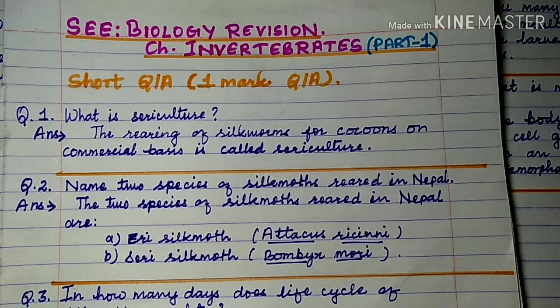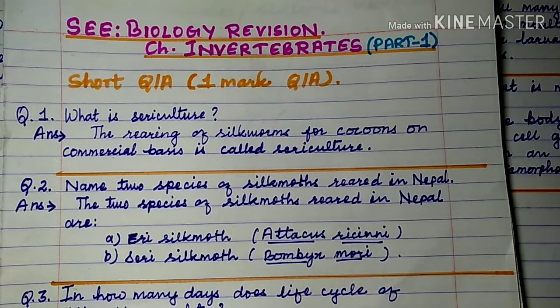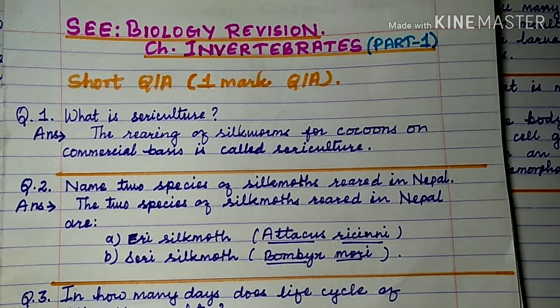Question number 2: Name two species of silk moth reared in Nepal. The two species of silk moth reared in Nepal are Eri silk moth, Attacus ricini, and Seric silk moth, Bombyx mori.